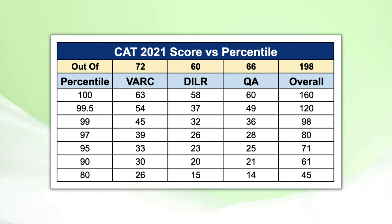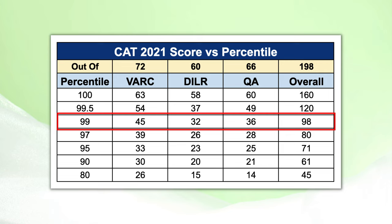In this table, you will see the overall numbers and individually every section's numbers. If you look at the 99 percentile row, you will notice that in VARC, in DILR it is 32 marks, and in Quant it is 36 marks. You can see the 99 percentile score in this table.